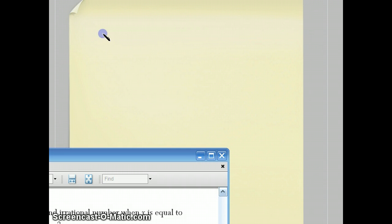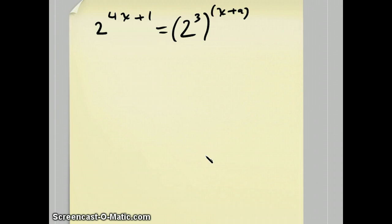See, I have 2 to the 4x plus 1. And I rewrite 8 as 2 to the 3rd to the, I'm going to put parentheses around this x plus a, make it a little bit easier. So, I'll copy this, 2 to the 4x plus 1. You raise a power to a power by multiplying those powers together. Don't forget to distribute 3x plus 3a. If you leave off that, if you just write 3x plus a, you won't get the right answer.